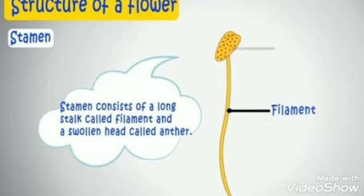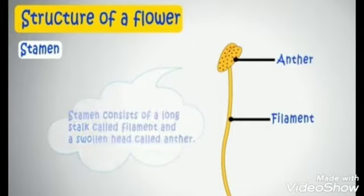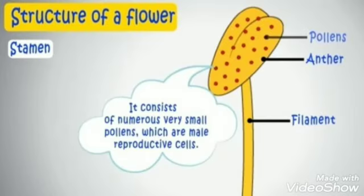The stamen consists of a long stalk called the filament and a swollen head called the anther. The anther contains numerous very small pollens, which are male reproductive cells. All the stamens together are called the androecium.